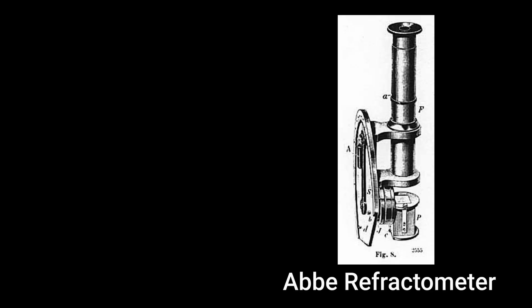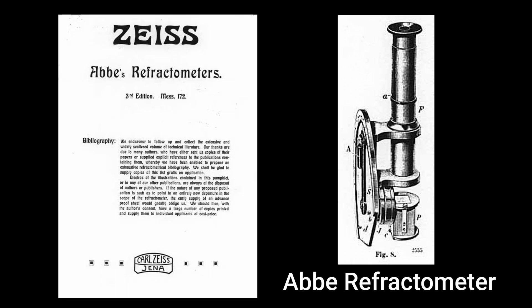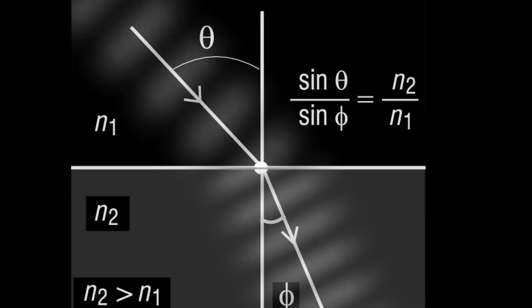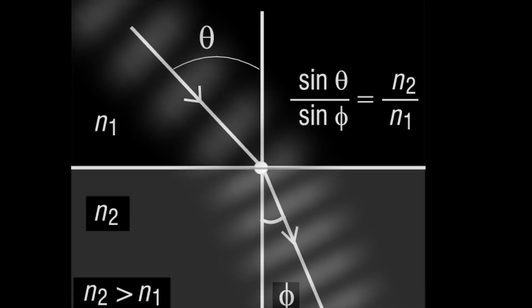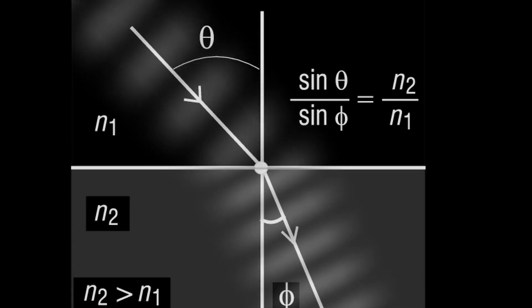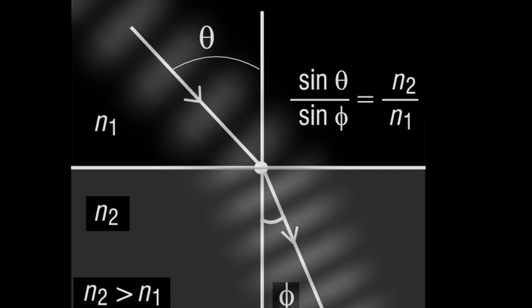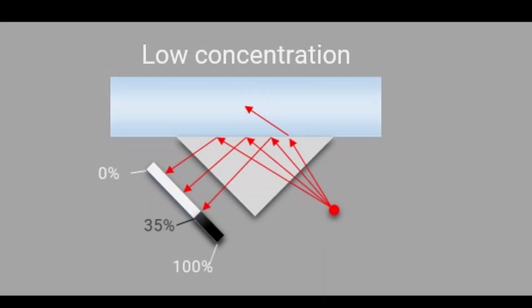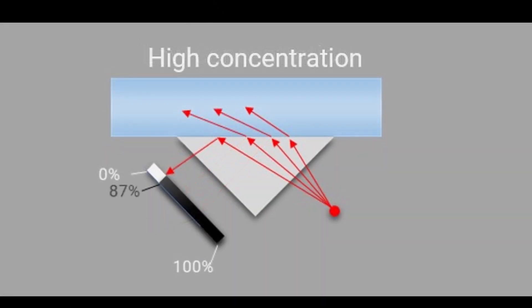The Abbe refractometer is based on the relative measurement of speed of light in a known optical material and another solid or liquid to be measured. Differences in the speed of light in these two materials cause a change in the angle of total reflection, which can be measured with the Abbe refractometer.